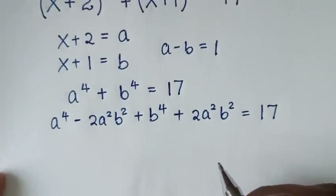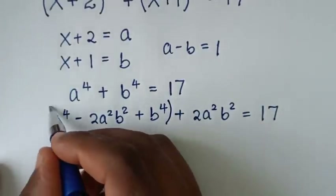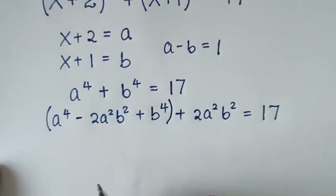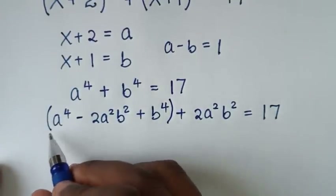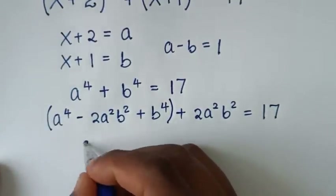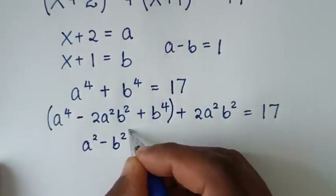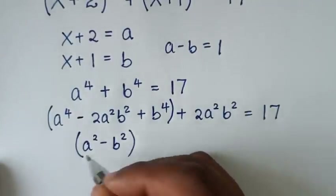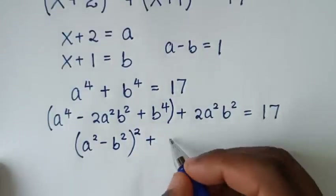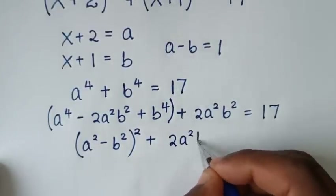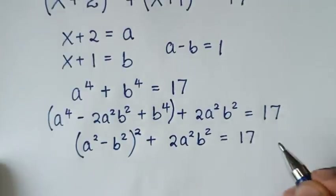Then in the next step, this part here is the expansion of a perfect square, which is (a²-b²)², then plus 2a²b² equals 17.